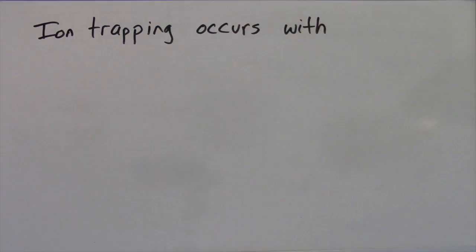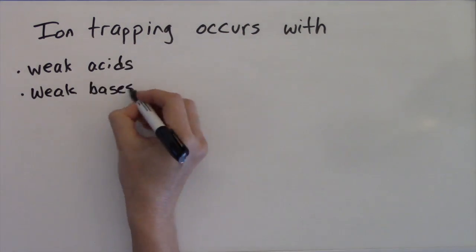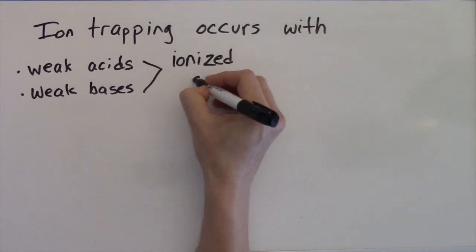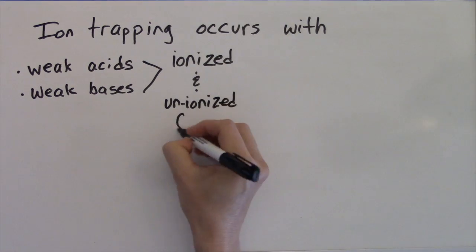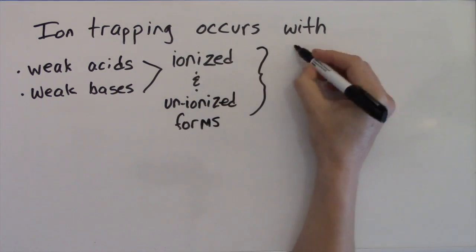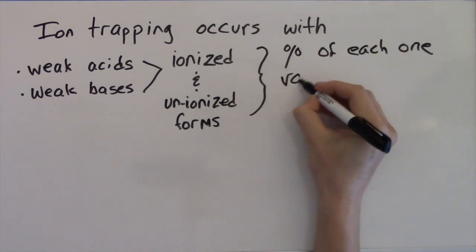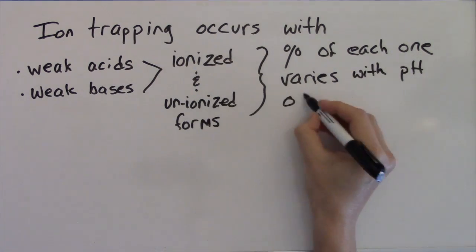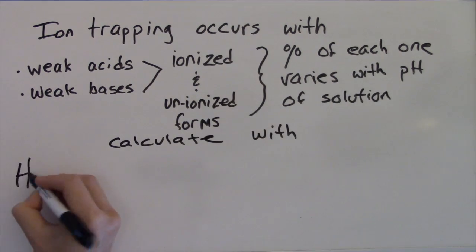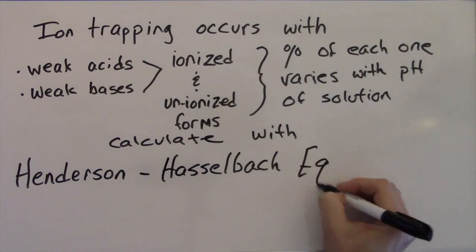Ion trapping occurs with drugs that are weak acids or bases, that is, drugs that exist in both ionized and unionized forms. The percentage of each of these forms depends upon the pH of the solution in which the drug is dissolved. This can be calculated using the Henderson-Hasselbalch equation.